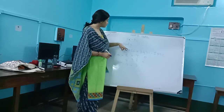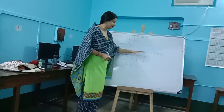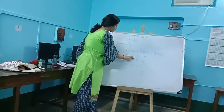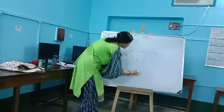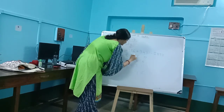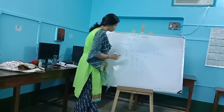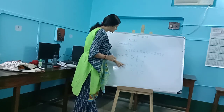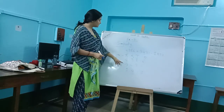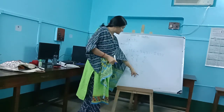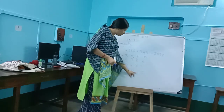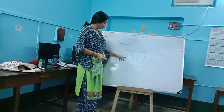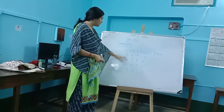Adding the tens: 8 plus 3 = 11, write 1 and carry 1 to the hundreds. Hundreds: 9 plus 4 = 13, plus 1 carry = 14, write 4 and carry 1. Thousands: 4 plus 3 = 7, plus 1 carry = 8. So the result of adding 4,986 and 3,431 is 8,417.